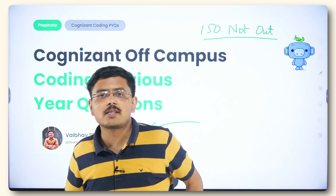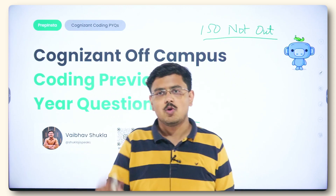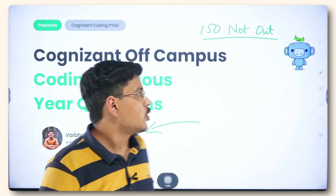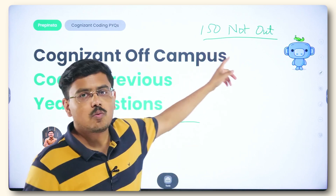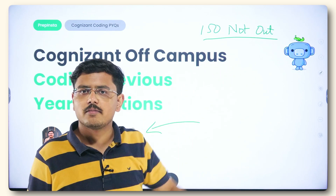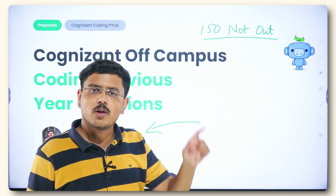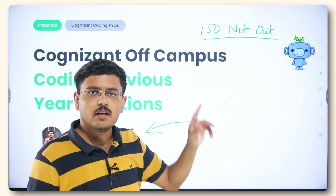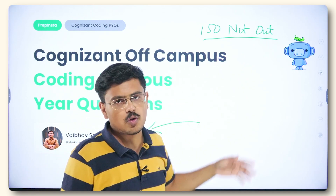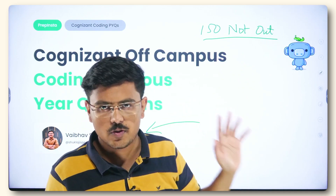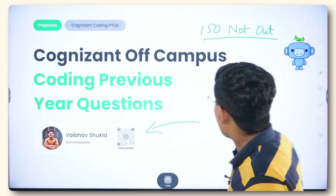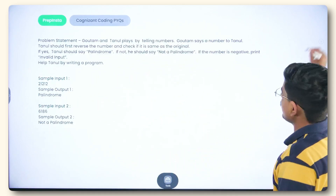You can access this list in the description box — you will find the link to the 150 Not Out list. Simply click on that link and you will reach the list where you can solve those questions. So without wasting any time, let's go ahead and solve the question.